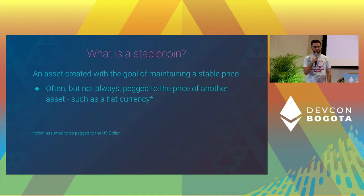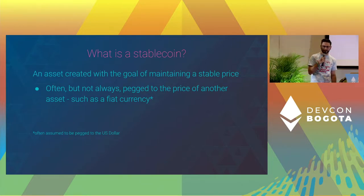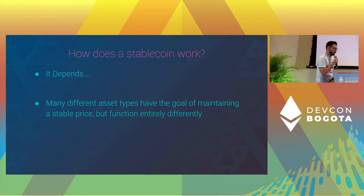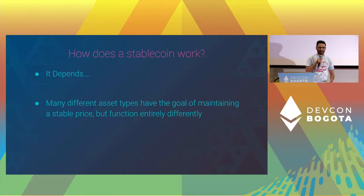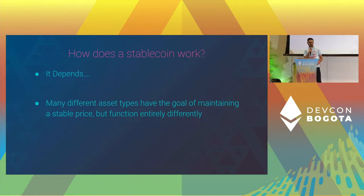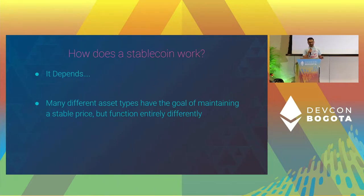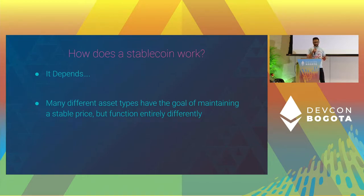Generally, if someone were to say they traded into a bunch of stables, you'd probably assume they're talking about a US dollar pegged stablecoin. How does a stablecoin work? It totally depends on the type of asset. This creates challenges and presents risks — if you assume a token is stable without understanding how the underlying stability mechanism works or what other risks are present, you may be taking on far more risk in your portfolio than you're intending.